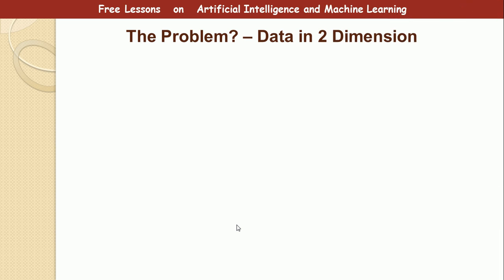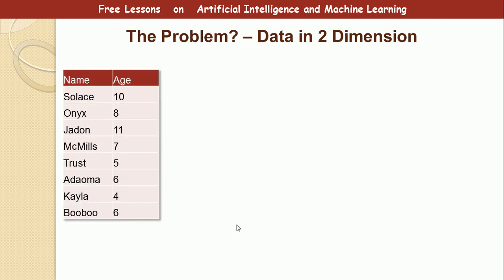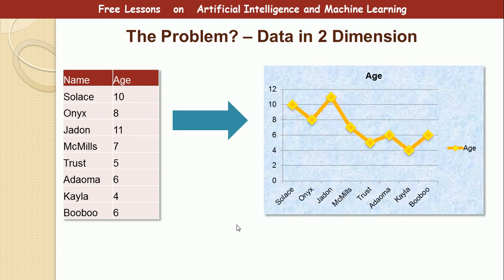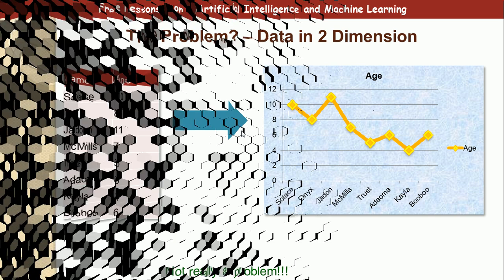Now, what is the problem? Let's assume that we have two-dimensional data and we plot it in a graph. We will be able to visualize this data very easily. We can see that we are plotting names against age, and it's easy to see the youngest is Kela, the oldest is Jadon, with other names in between. Data in two dimensions is not really a problem.